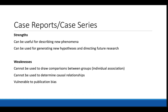Strengths of case reports and case series include being useful for describing new phenomena and generating new hypotheses. Besides not being able to draw causal inferences, they are also subject to publication bias — the predisposition of academic journals to avoid publishing anything that is not sensational or groundbreaking. This can lead journals to avoid publishing less sensational research, especially related to negative findings, even if it is potentially impactful.